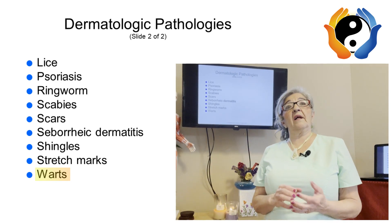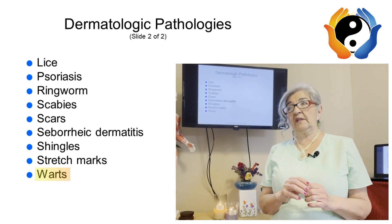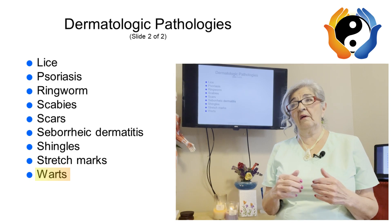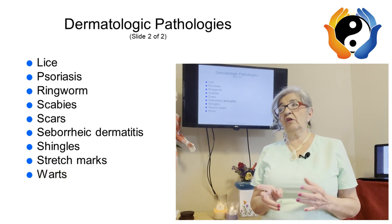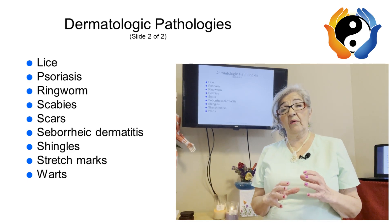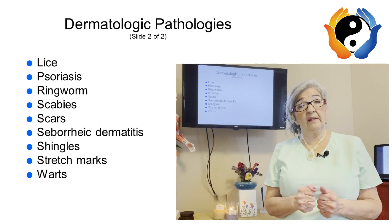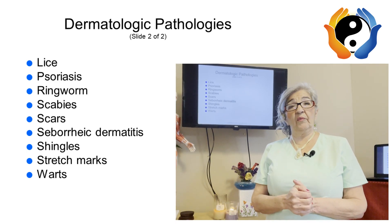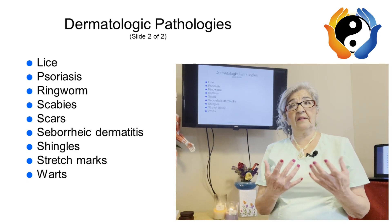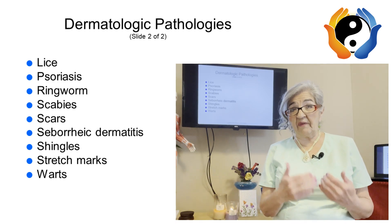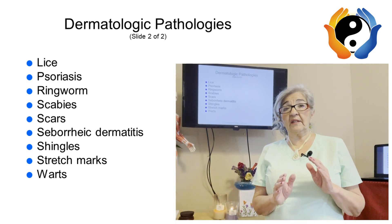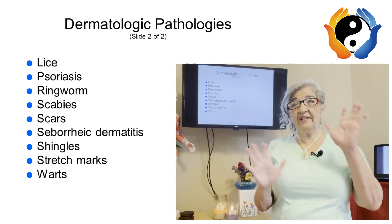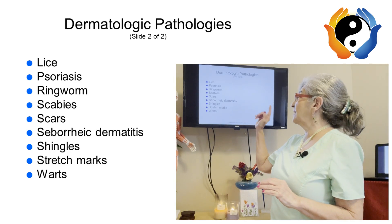Warts are rough, raised, oval-shaped masses on the skin. They're common on the hands and feet but can appear anywhere, including around the buttocks. They are caused by HPV, the human papillomavirus, and are contagious. Avoid these areas or work with gloves or over the sheet, and make sure you disinfect your sheets. Some people have warts on their hands — just ask if they've seen a doctor and either avoid the area or work over the sheet with gloves.